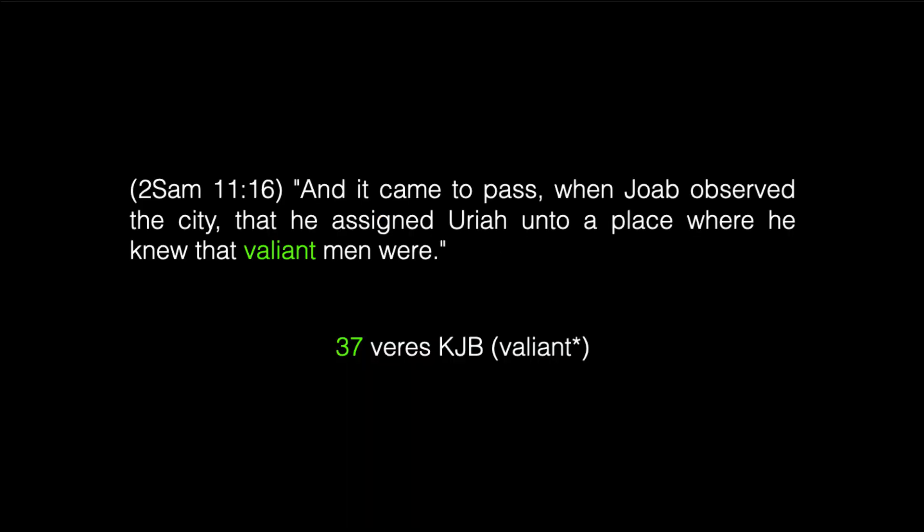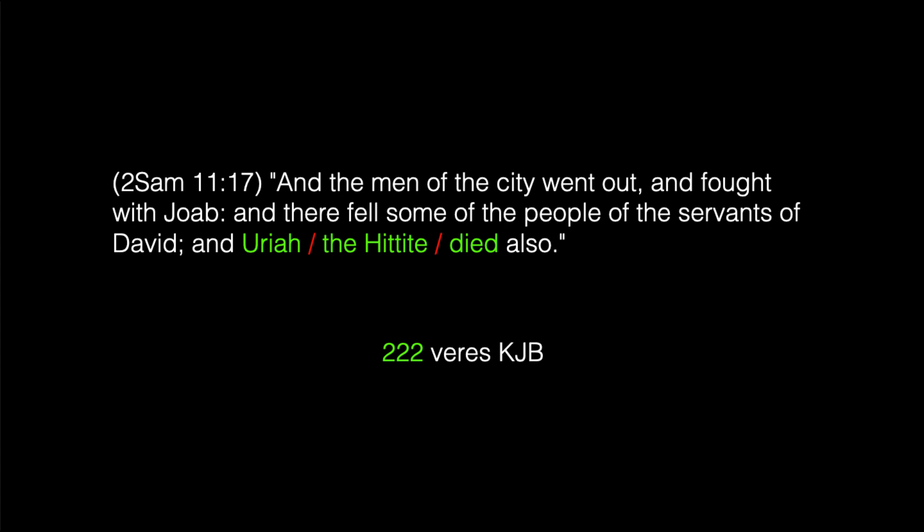Verse 16: 'And it came to pass when Joab observed the city that he assigned Uriah unto a place where he knew that valiant men were.' All forms of the word 'valiant' occur in 37 verses of the King James Bible. Verse 17: 'And the men of the city went out and fought with Joab and there fell some of the people of the servants of David and Uriah the Hittite died also.' The name 'Uriah' combined with 'the Hittite' and the word 'died' appear in 222 verses of the King James Bible.